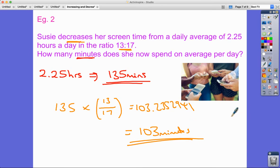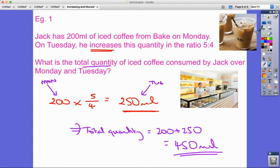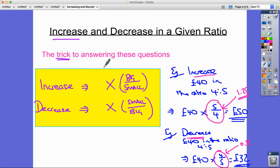So a couple of typical questions - decreasing there in a given ratio and previously increasing in a given ratio using our trick. Don't forget the trick. These are common questions as I mentioned at IGCSE and GCSE level.